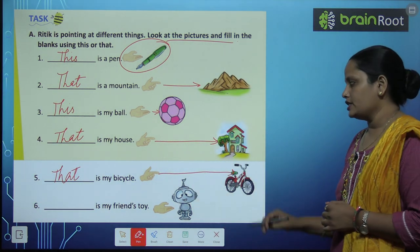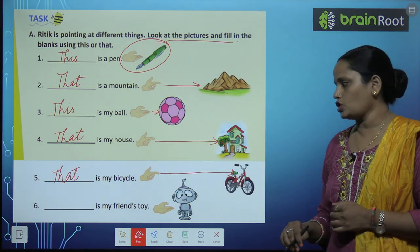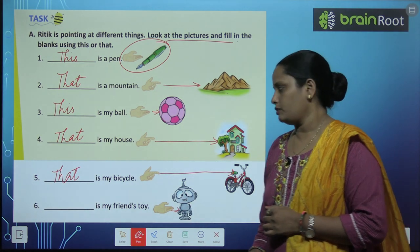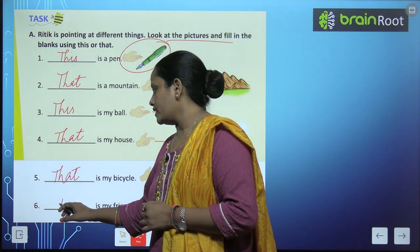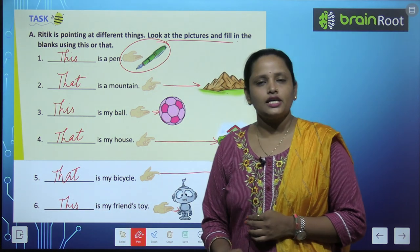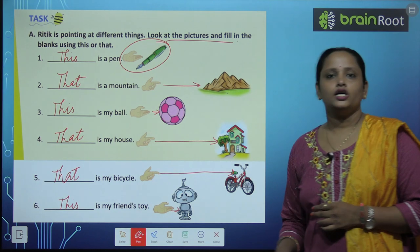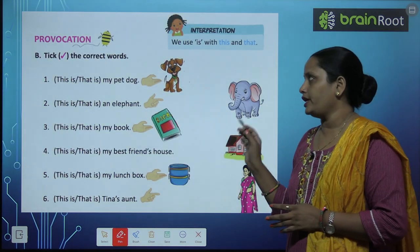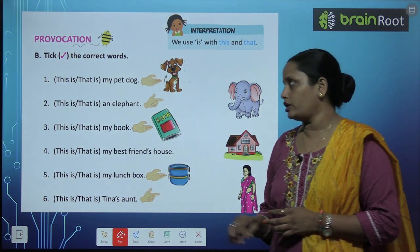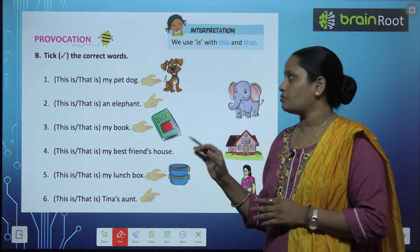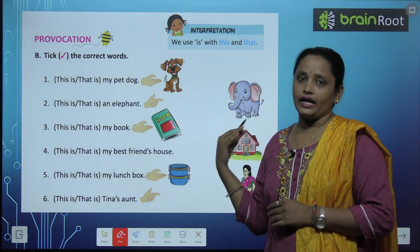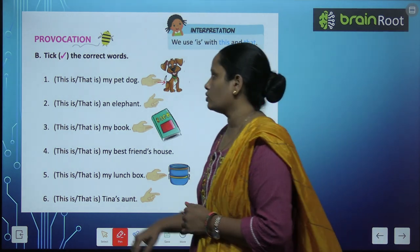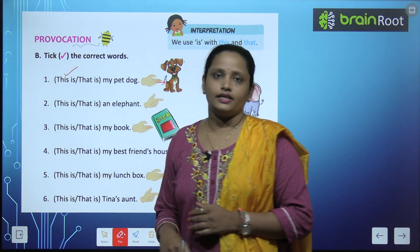Dash is my friend's toy — look how far the friend's toy is. Oh, it is very near! So we write 'this'. This is my friend's toy. Now let's move on to Exercise B. Here we have to choose the correct word. This is my pet dog or that is my pet dog? It is very near, so we take 'this is'.